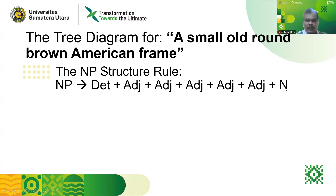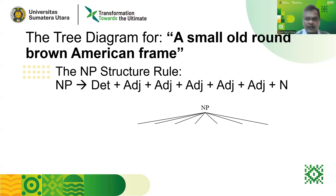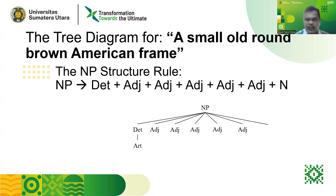When we draw a tree diagram, we immediately branch the NP into seven branches, because we have seven constituents of the NP. The first one is the determiner, represented here by an article — the word 'a.' And then we have five adjectives, and the last constituent of the phrase is a noun.